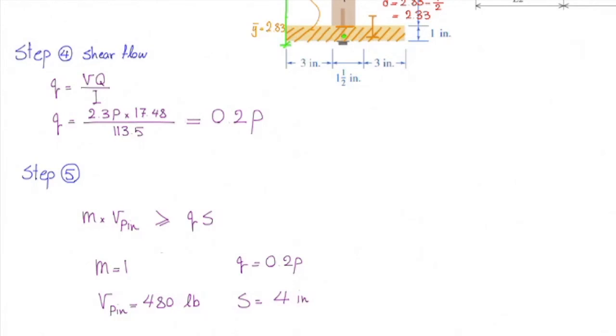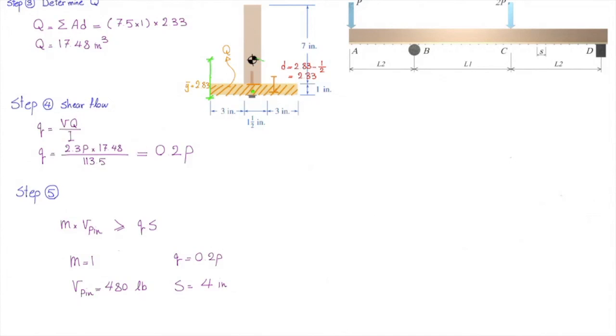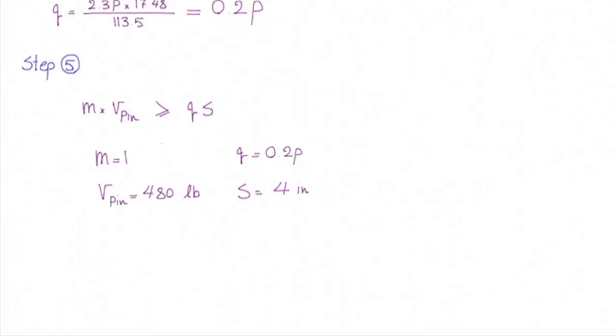Now I plug the values here to determine the required value of load. I need to solve for P. So 1 times 480 pounds should be larger than 0.2P times 4, and if I solve that for P, the value of force in this case would be 600 pounds. So this is the maximum load that we can apply to this beam.